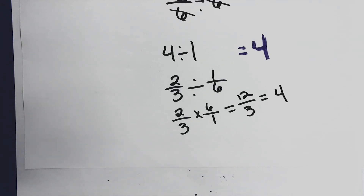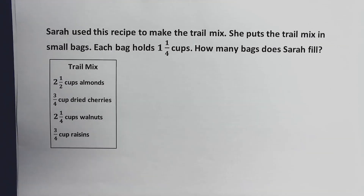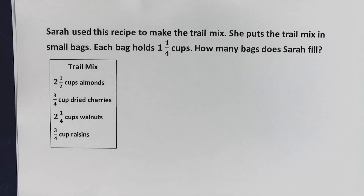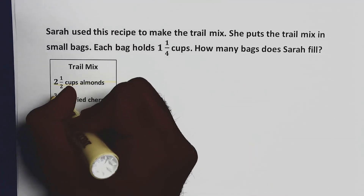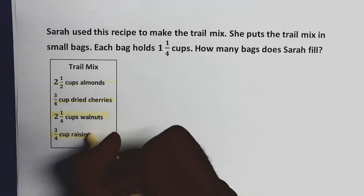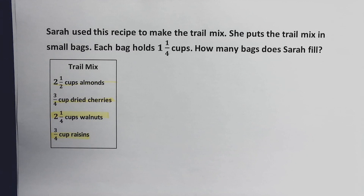Now let's apply this knowledge to solve some word problems. Here's your word problem: Sarah used this recipe to make trail mix. She put the trail mix in small bags. Each bag holds one and one-fourth cups. How many bags does Sarah fill? We have to interpret what the problem is asking. We know the trail mix includes two and a half cups of almonds, three-fourths cup of dried cherries, two and one-fourth cups of walnuts, and three-fourths cup of raisins.